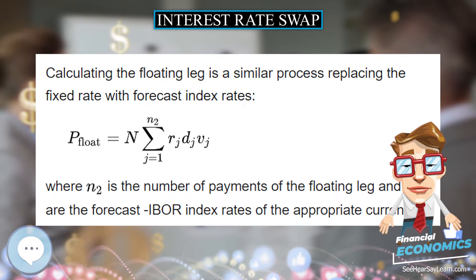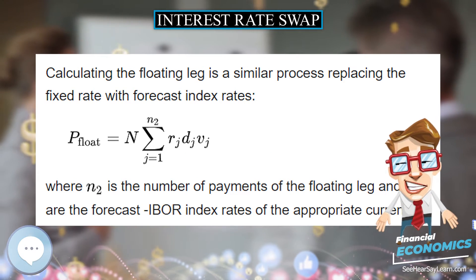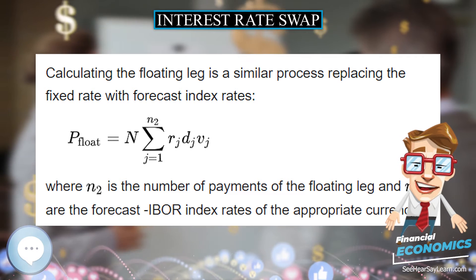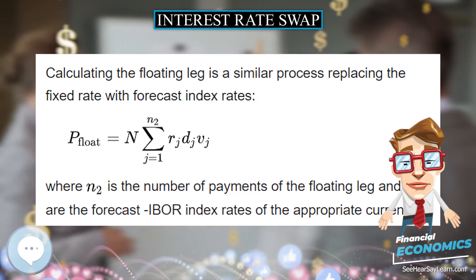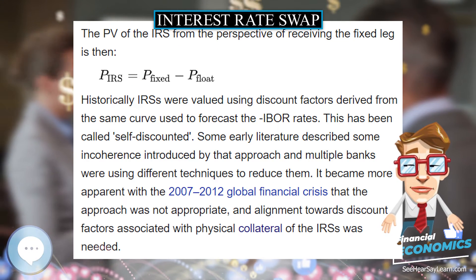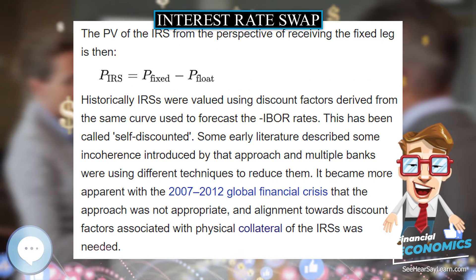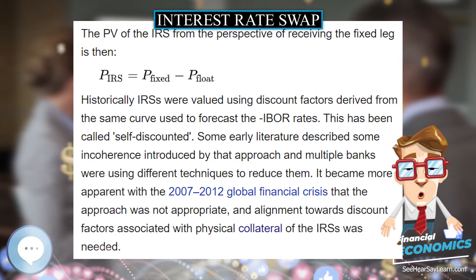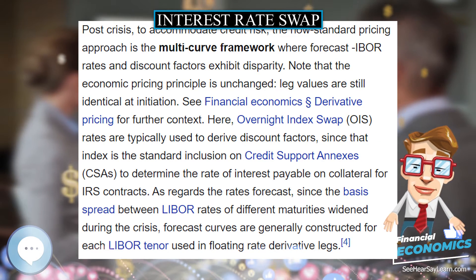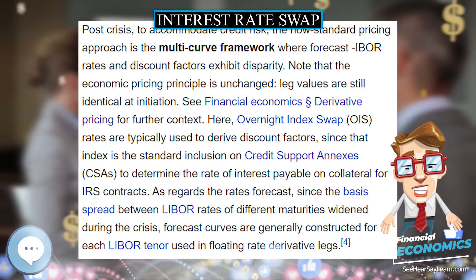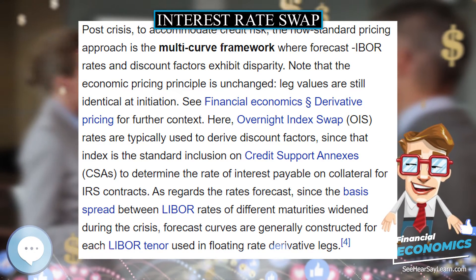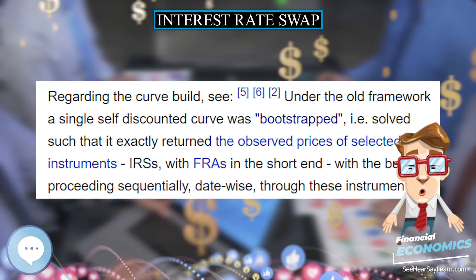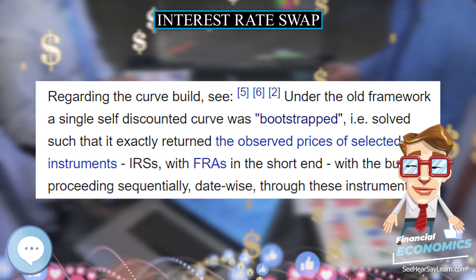The way these changes in value are reported is the subject of IAS 39 for jurisdictions following IFRS, and FAS 133 for US GAAP. Swaps are marked to market by debt security traders to visualize their inventory at a certain time. As regards P&L attribution and hedging, the new framework adds complexity in that the trader's position is now potentially affected by numerous instruments not obviously related to the trade in question.